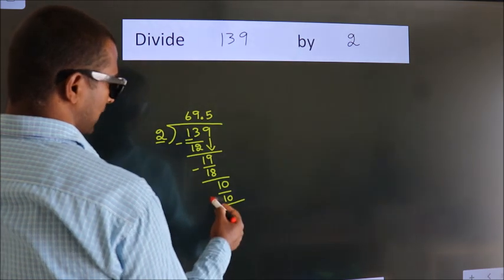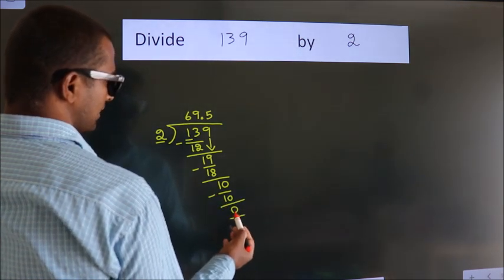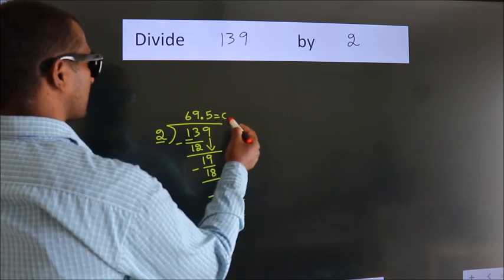Now we subtract, we get 0. We got remainder 0. So this is our quotient.